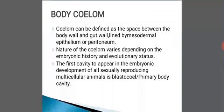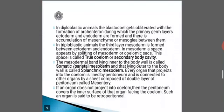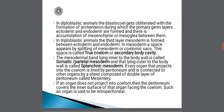Coming to body coelome: coelome basically refers to a body cavity or a space. It can be defined as the space between the body wall and gut wall, lined by mesodermal epithelium or peritoneum. The nature of the coelome varies depending on the embryonic history and evolutionary status. The first cavity to appear in embryonic development of all sexually reproducing multicellular animals is the blastocoel, also called the primary body cavity.